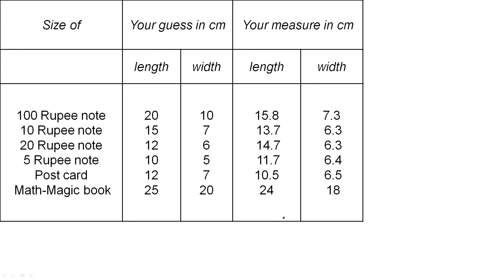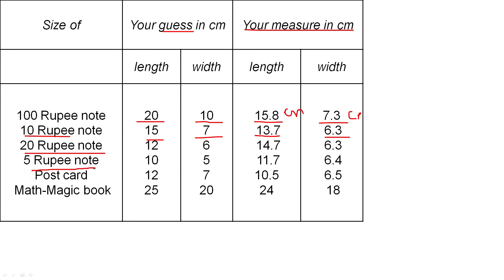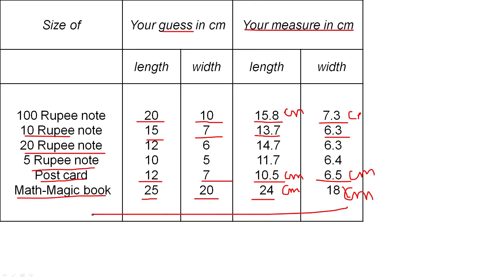For the 100 rupee note, my guess was length 20 centimetre and width 10 centimetre. But when measured, it was 15.8 centimetre long and 7.3 centimetre wide. For a 10 rupee note, my guess was 15 centimetre length and 7 centimetre width, but really it was 13.7 centimetre and 6.3 centimetre. A postcard: my guess was length 12 centimetre and width 7 centimetre, but really 10.5 centimetre length and 6.75 centimetre width. Our math textbook: guess was 25 and 20, but really 24 centimetre length and 18 centimetre width. You can measure yourself and find the answers.